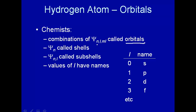We have three quantum numbers: n, l, and m_l. n is called the principal quantum number. Wave functions distinguished by different values of n are called shells. Within a given value of n, you can have various values of l, and those are called subshells. Those values of l have names: l=0 is s, l=1 is p, l=2 is d, l=3 is f, l=4 is g, l=5 is h, and so on. So now we know what we mean by the hydrogen 1s orbital: n=1 and l=0.